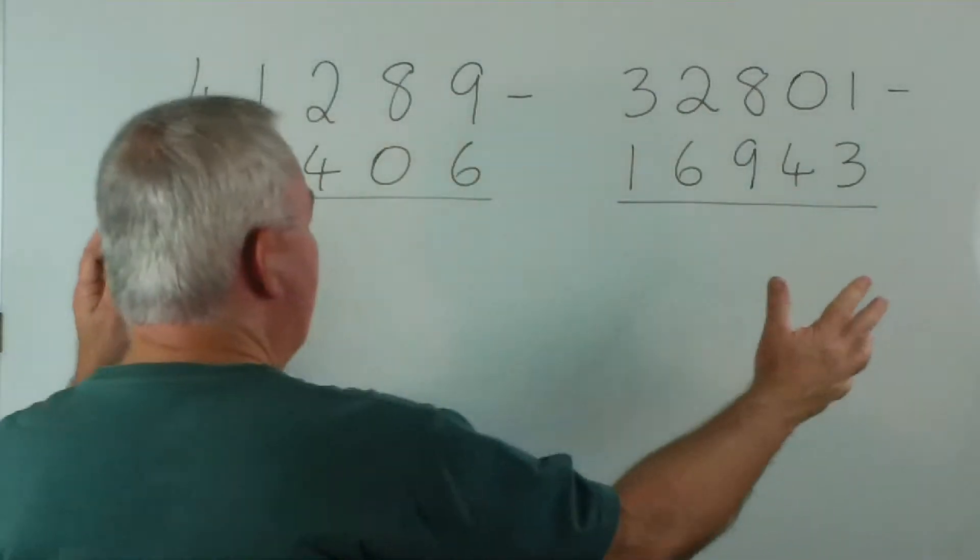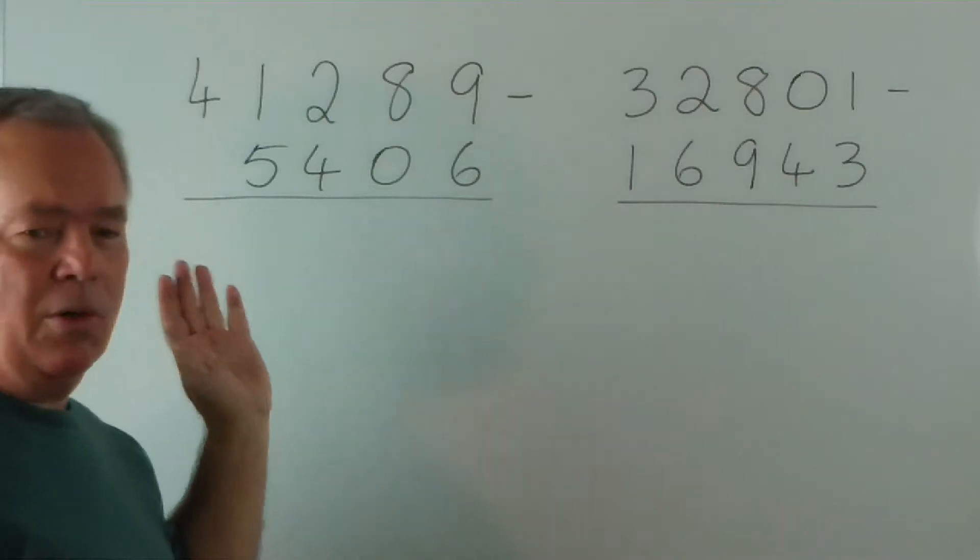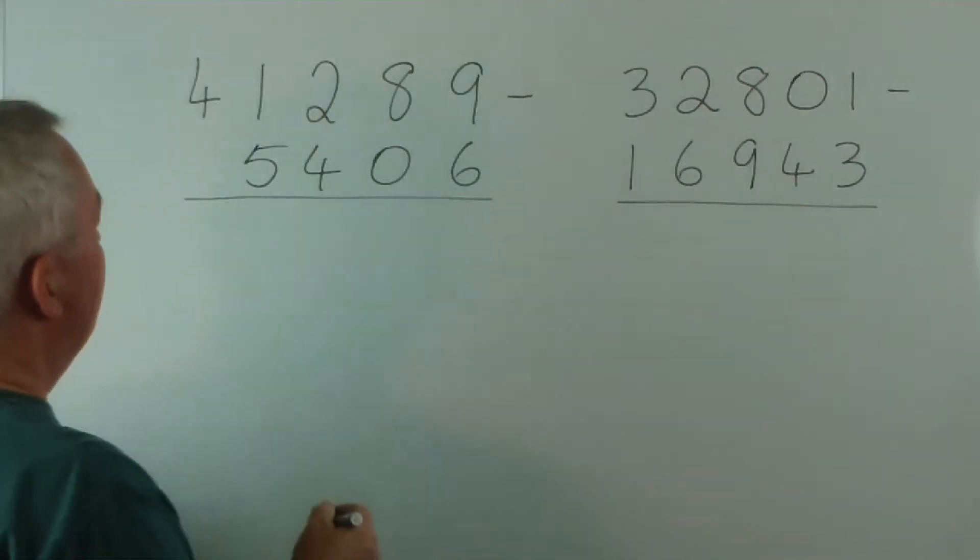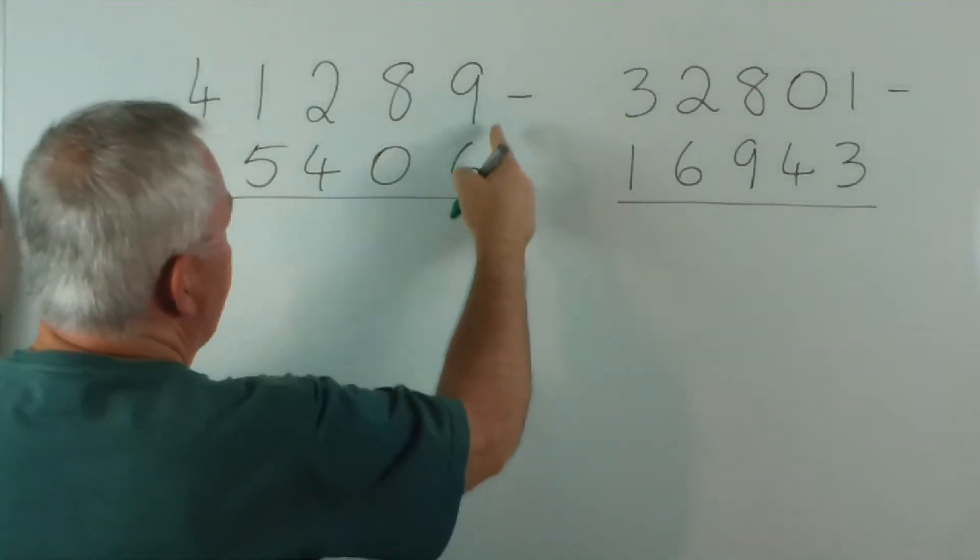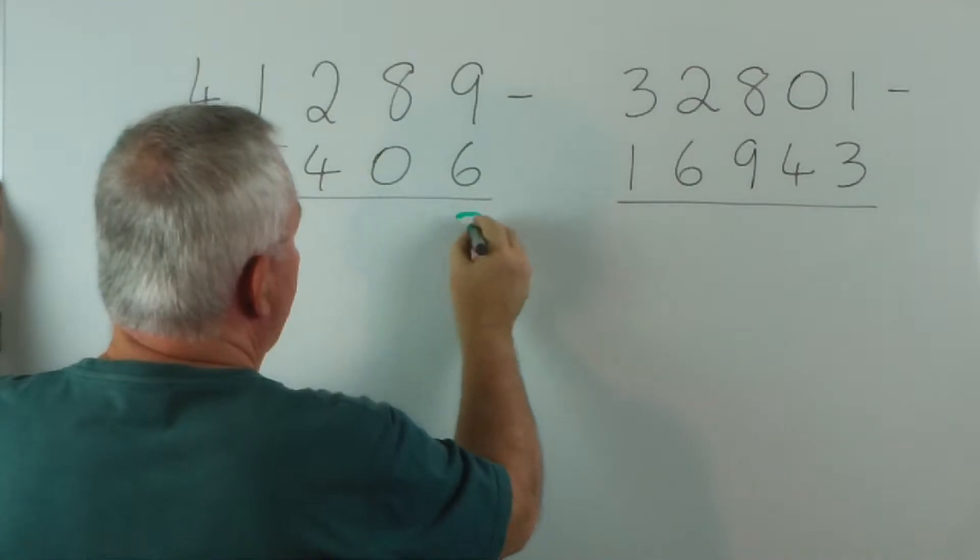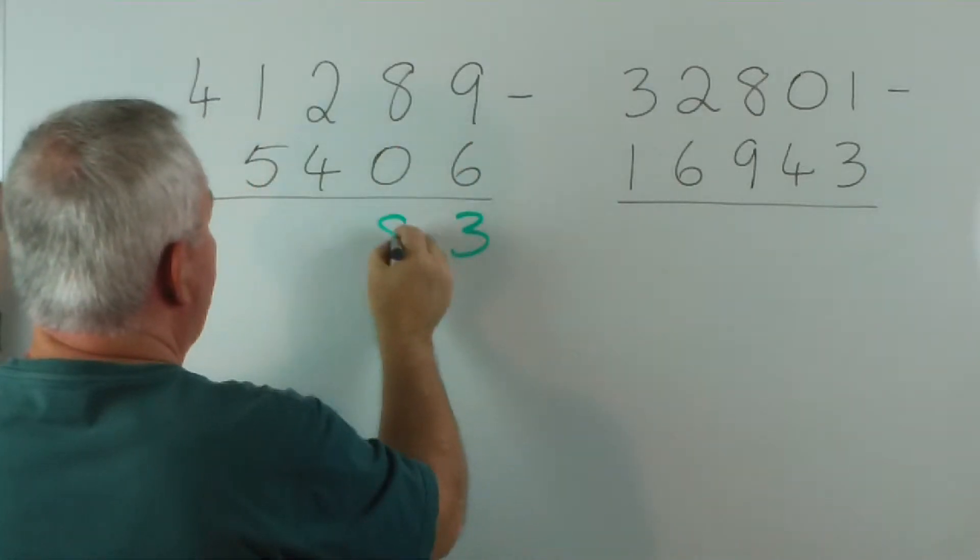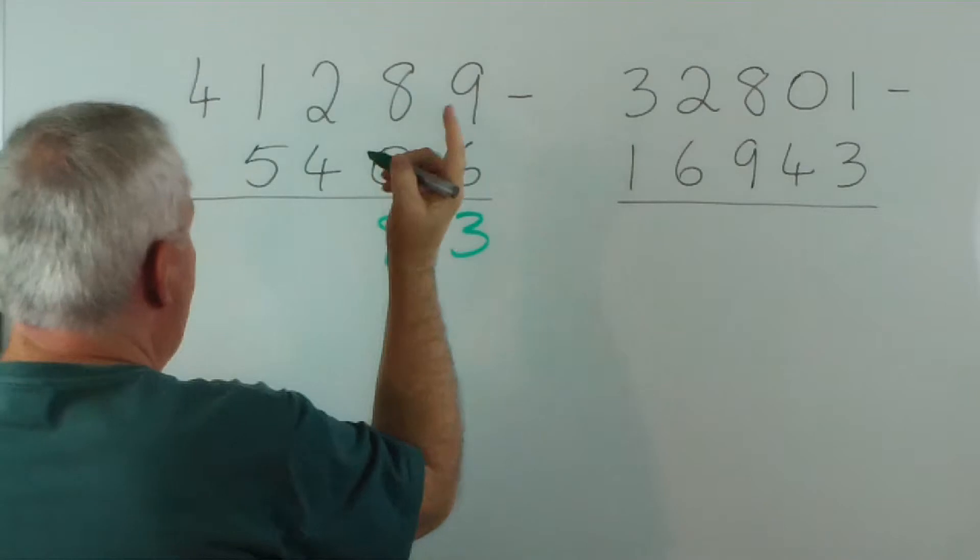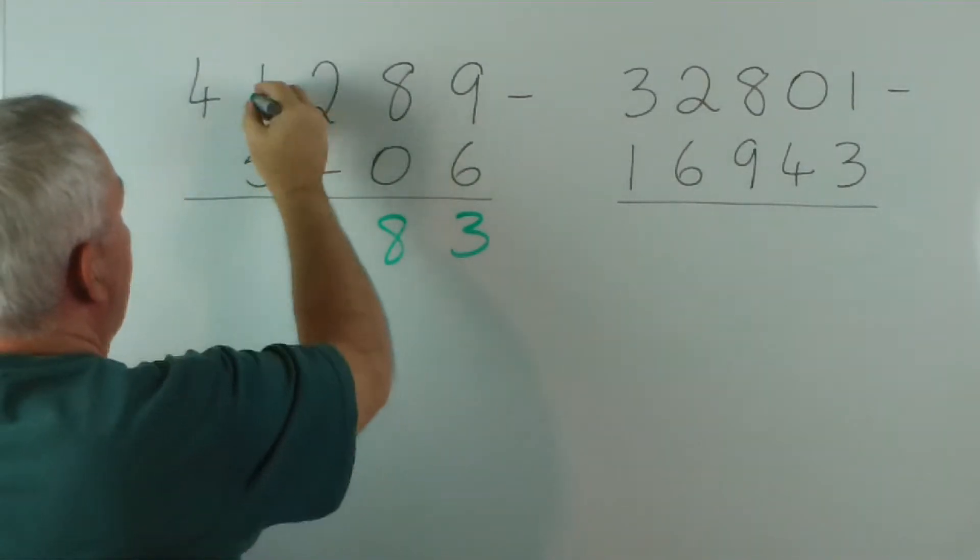Let's perform two subtractions. I'm going to do one using borrowing and one using the carry method. 6 from 9 we can do. 0 from 8... I wrote these up randomly. Oh, here we go, we are going to borrow. 4 from 2 we can't do, so we borrow.